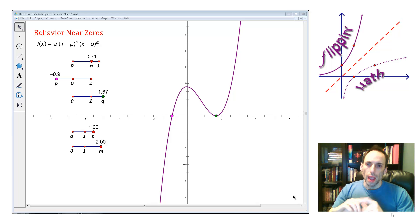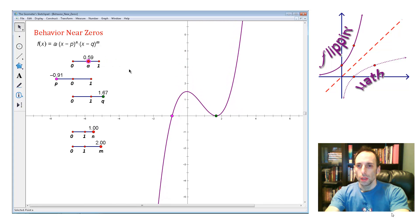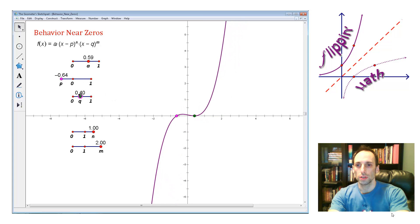What I have in this sketch is a polynomial function that's in factored form, as you can see. I have an a value which I can change. I also have two zeros there. I have x minus p, and I can change that p value. I can change the p value. So it changes that x-intercept. And the q value, I can change that one, wherever I want it to be.